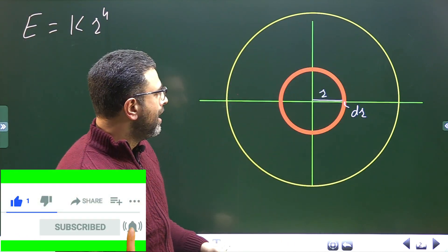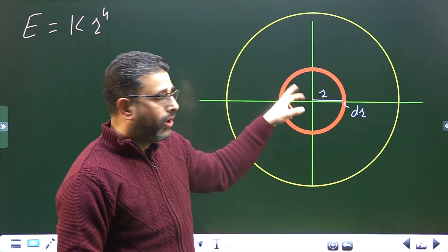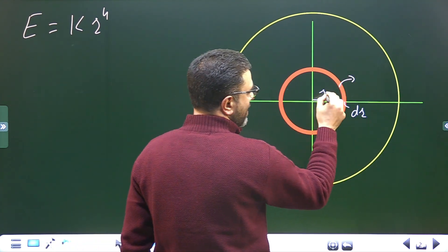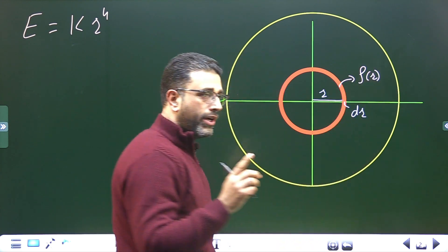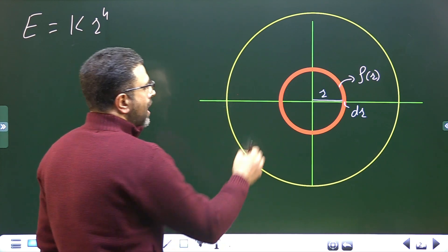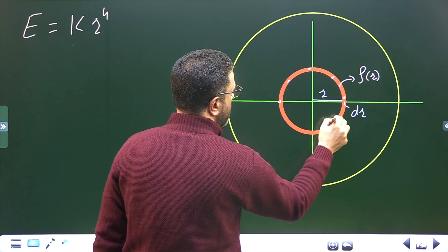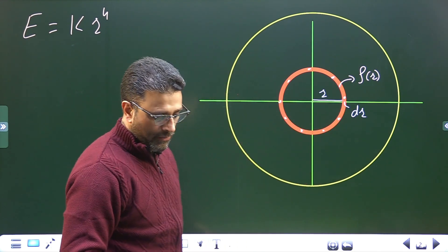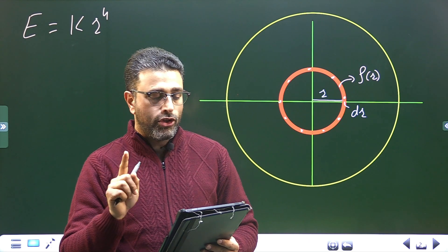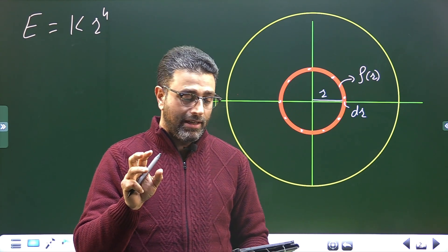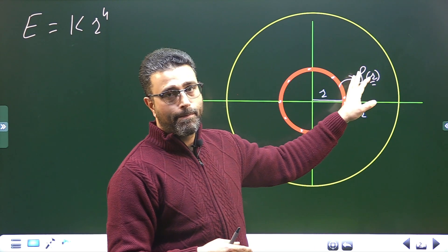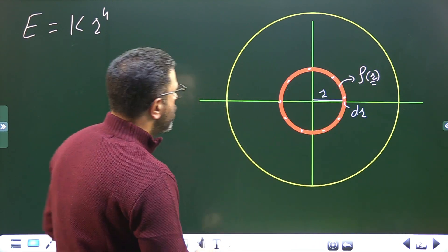I'm considering a smaller shell within the spherical charge distribution of radius r and thickness dr. At a point at radial distance r, the density is ρ(r). Since the distribution is not uniform but has spherical symmetry, charge density only depends on r, so at all points within this shell the density will be the same.